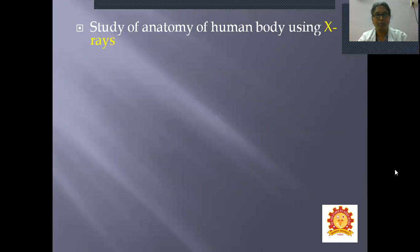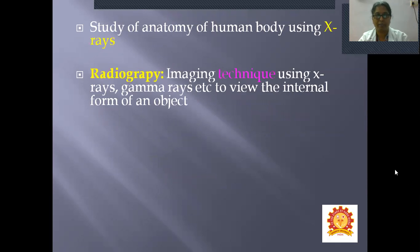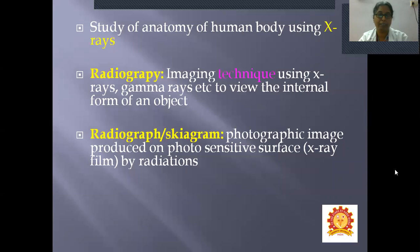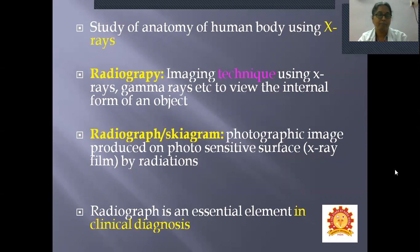What is Radiological Anatomy? It is a study of anatomy of the human body using X-rays. Radiography is an imaging technique using X-rays, gamma rays, etc. to view the internal form of an object — to view the internal form of a living individual. A radiograph is a photographic image produced on a photosensitive surface by X-ray radiation. Radiography is an essential element in clinical diagnosis; it helps in confirmation of diagnosis in the clinical setup.